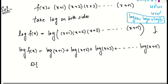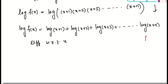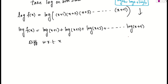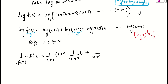Now we simply differentiate both sides with respect to x. Remember, the derivative of log x is 1/x. On the left side, differentiating log(f(x)) gives (1/f(x)) · f'(x). On the right side, the derivative of log(x+1) is 1/(x+1), derivative of log(x+2) is 1/(x+2), derivative of log(x+3) is 1/(x+3), and so on up to 1/(x+n), since the derivative of (x+n) is 1.